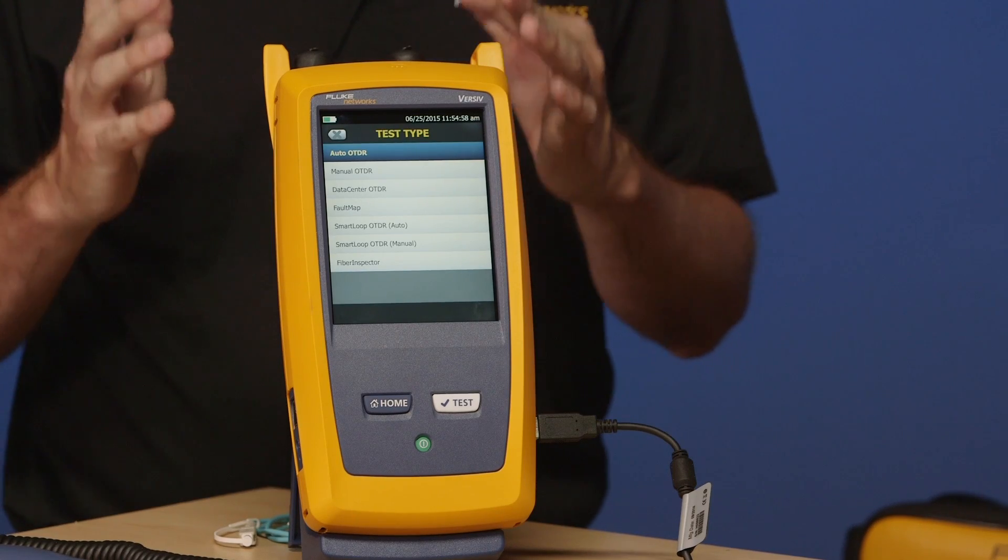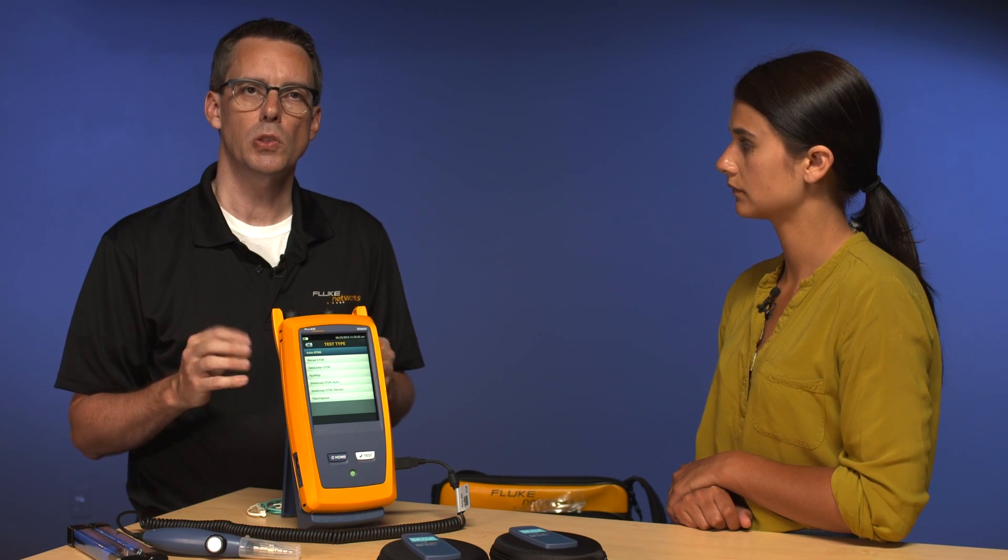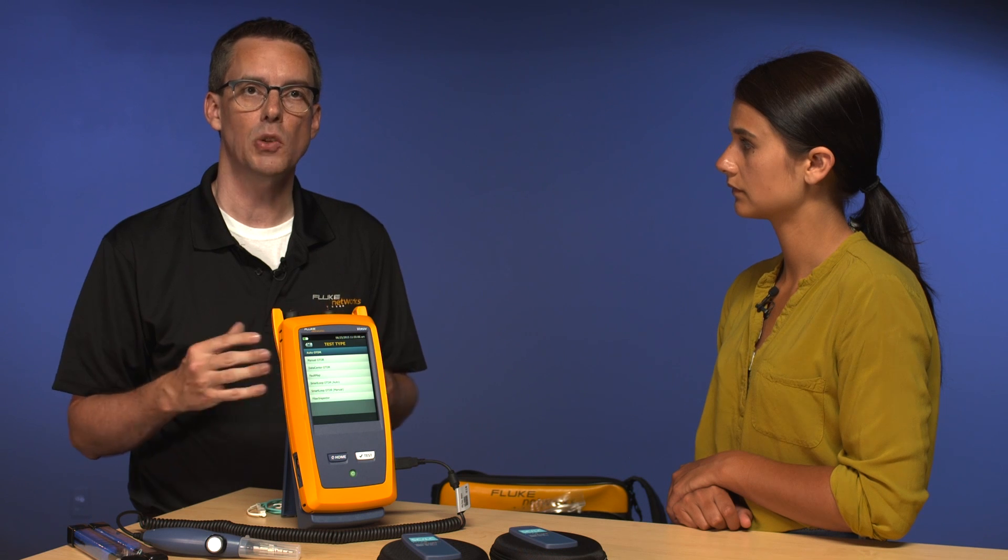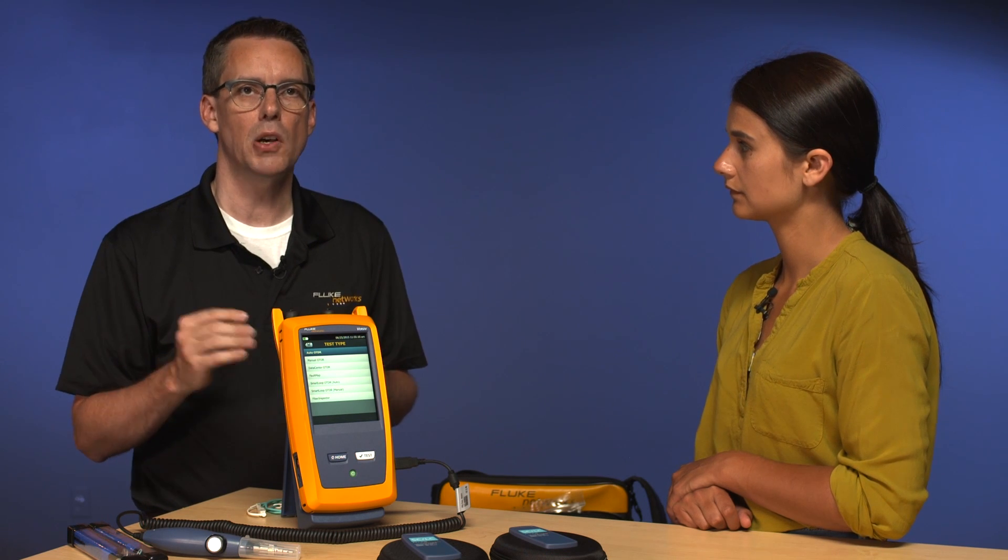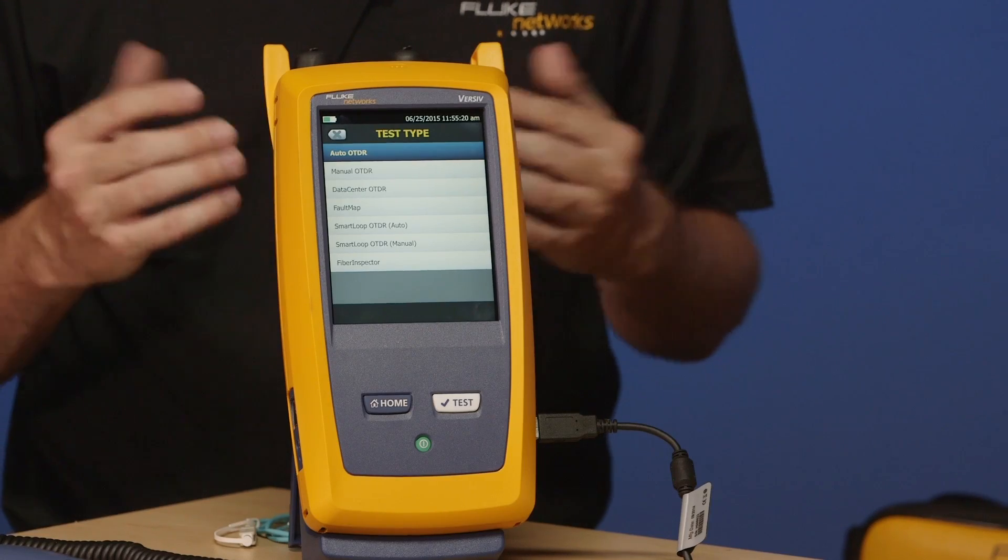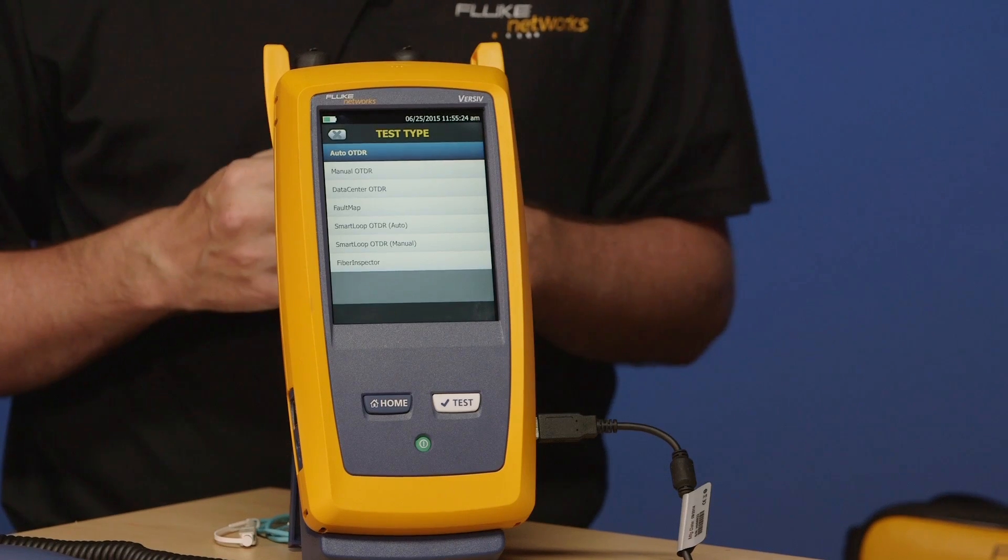The reason why is, if you leave it in Auto OTDR mode, it will decide what the pulse width, the averaging, and all the ranging, and all the other stuff that you typically manually have to set up. Now, if you're an OTDR person, you may not like Auto OTDR, and you want to set this up yourself. You want to set your ranges and your pulse widths and your average each time yourself. That's totally fine. Second option on the list here is Manual OTDR. So you can still do that. Go in there and set up all your pulse widths in there.